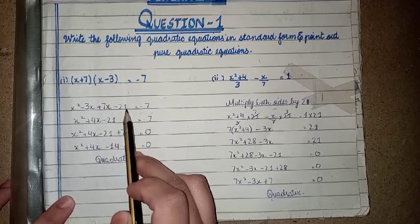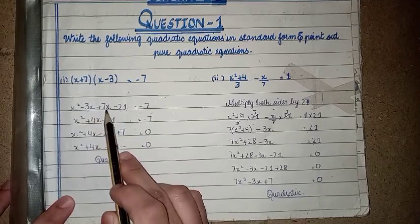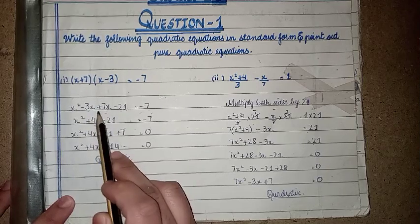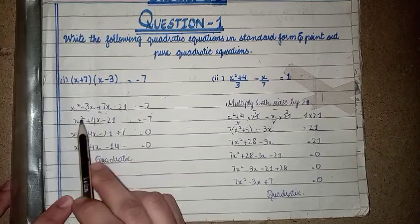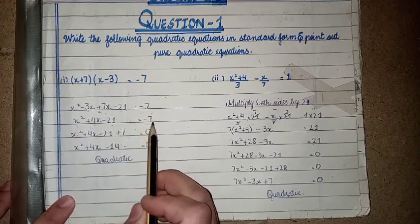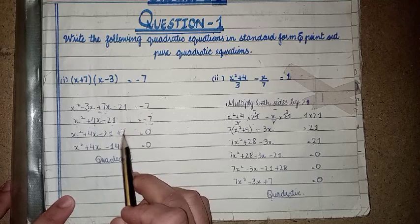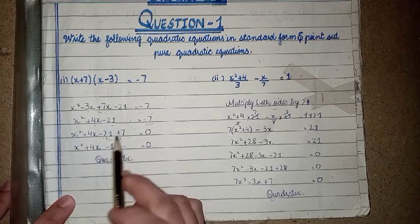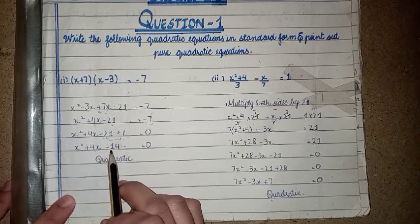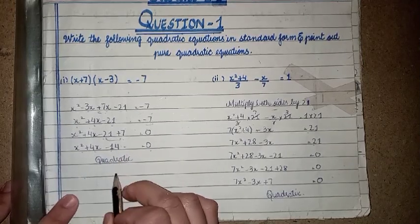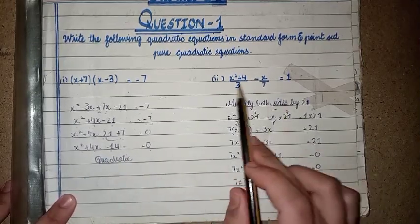Expanding: plus 7x minus 21 equals -7. Combining like terms, -3x + 7x gives +4x, so we have x² + 4x - 21 = -7. Moving -7 to the left side: -21 + 7 = -14. The answer is x² + 4x - 14 = 0. This is a quadratic equation.